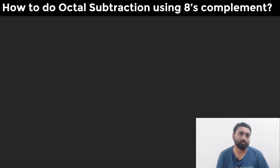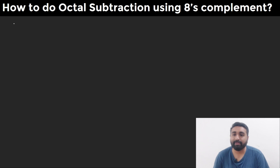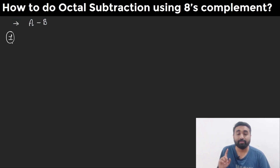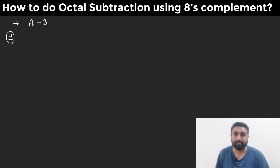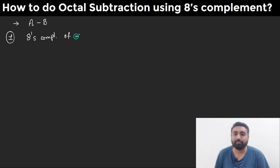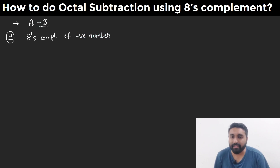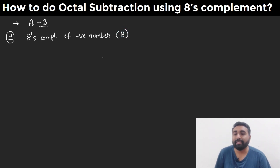First of all, we want to understand how to do octal subtraction using 8's complement method. There are some steps you need to follow. Let's say you are doing octal subtraction between two numbers, A minus B. In the first step, we need to find the 8's complement of the negative number. Here B has the negative sign, so B is our negative number.